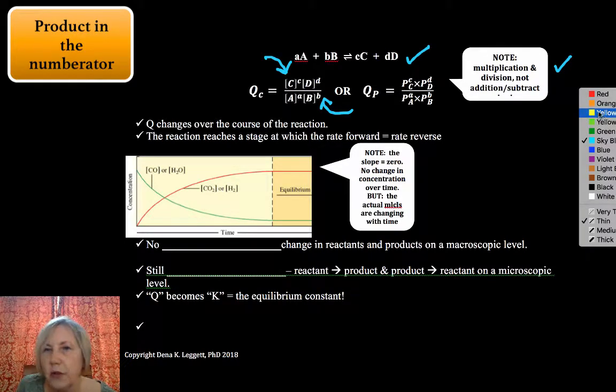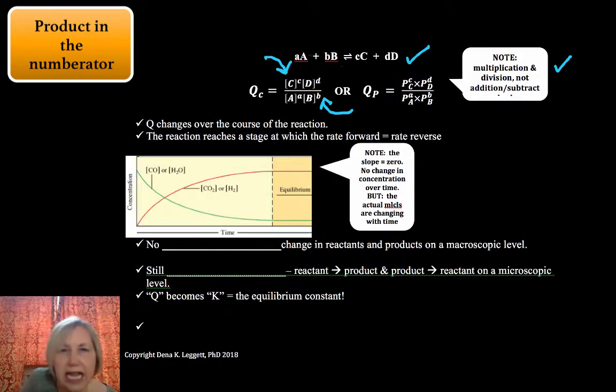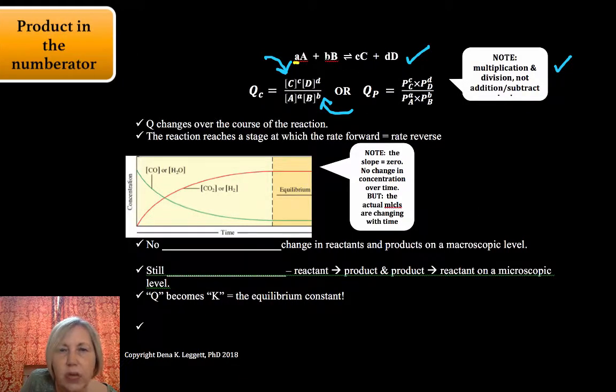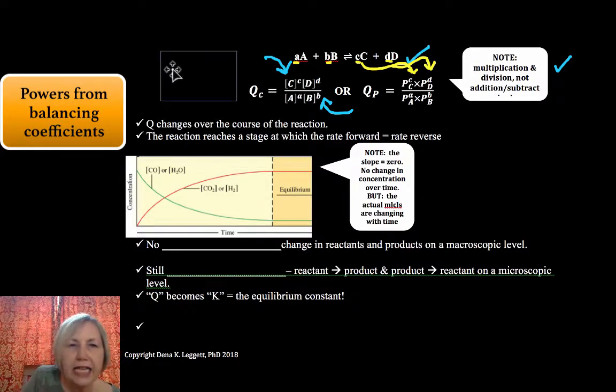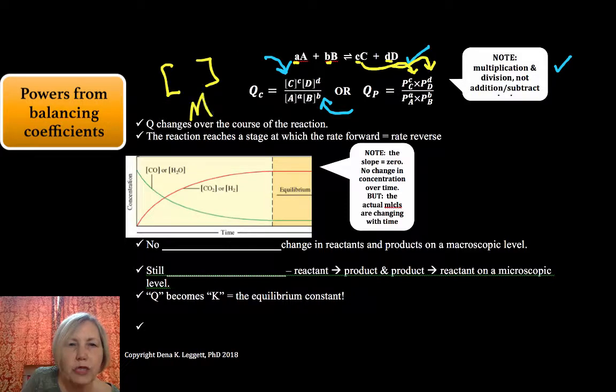Now, another thing I want you to notice is that unlike kinetics, we are taking our powers directly from our balancing coefficients. We're not going to need data to determine those powers. So you notice that power comes directly from the balancing coefficient. The brackets, hopefully you know by now that brackets mean molarity, moles per liter.